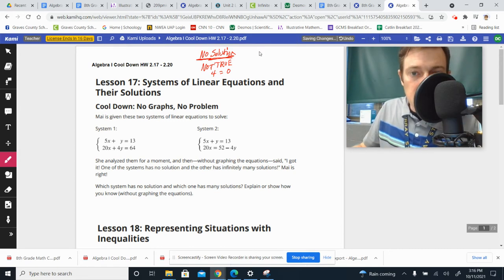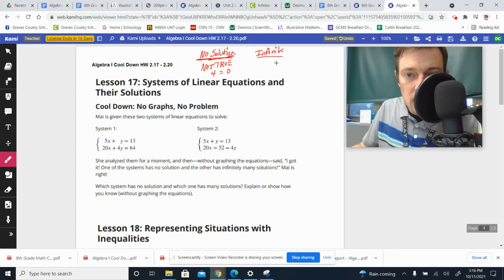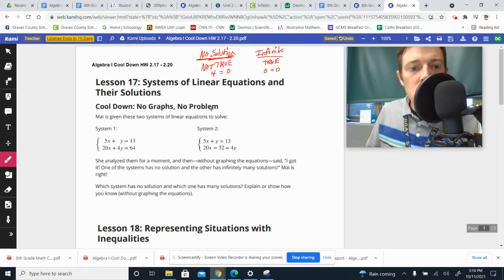If it has infinitely many solutions, you're going to work the thing out, eliminate some stuff, and then you're going to get something that is true. Maybe you'll end up with 0 equals 0 or 5 equals 5 or something like that. So let's work one of them out, and then process of elimination will lead us to the other.